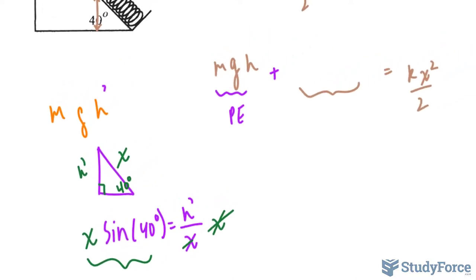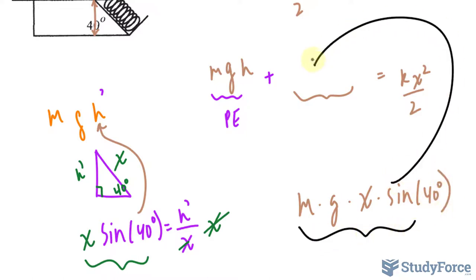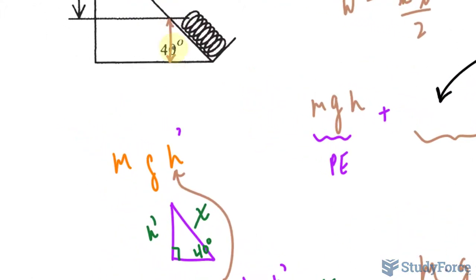And I'll take this expression and replace this h with it. So I have m times g times x times sine 40. Now I have an expression for the potential energy from here to here.